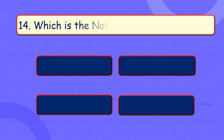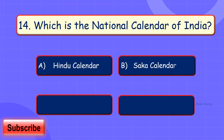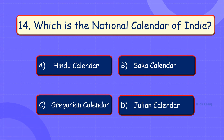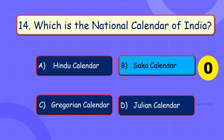Which is the national calendar of India? A. Hindu calendar. B. Saka calendar. C. Gregorian calendar. D. Julian calendar. Answer is Option C.